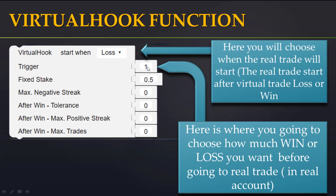Here you can see the trigger. This is where you choose how many wins or losses you want before going to a real trade. If you put two here, it means after two losses the trade will start in real. If you put five, it means after five losses the next trade will be a real trade. The count depends on what you have chosen — win or loss — in the 'Start When' setting.